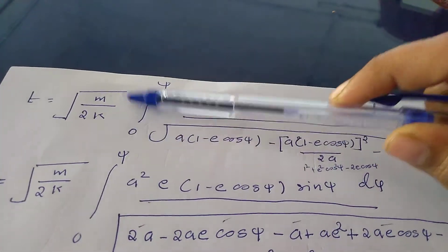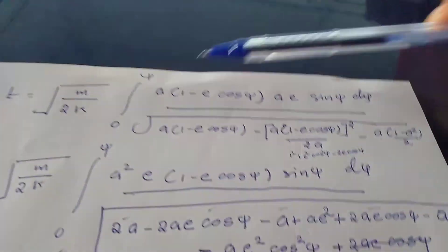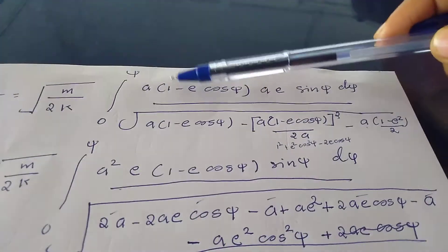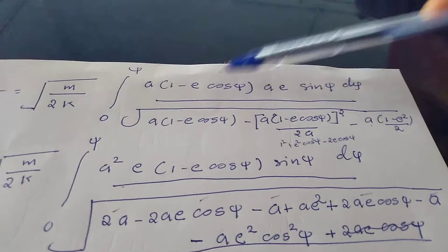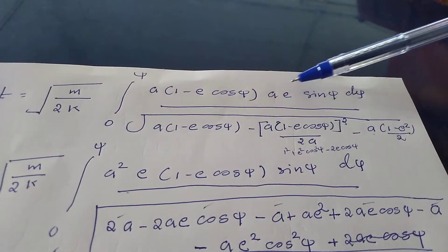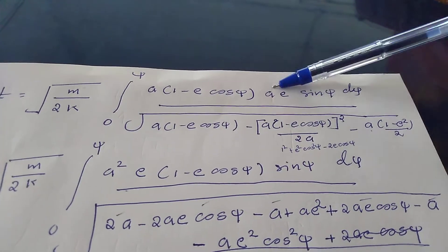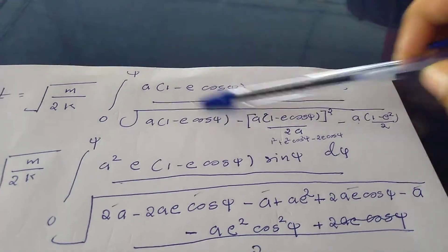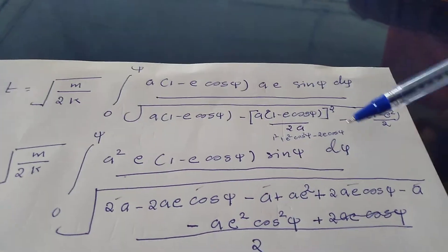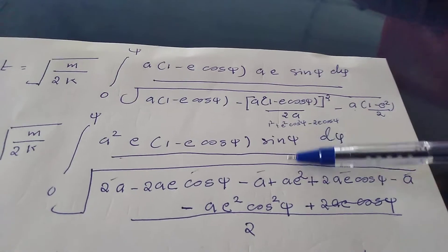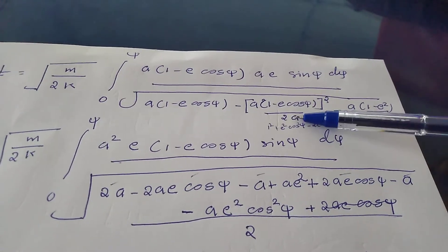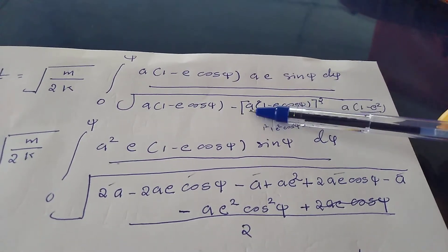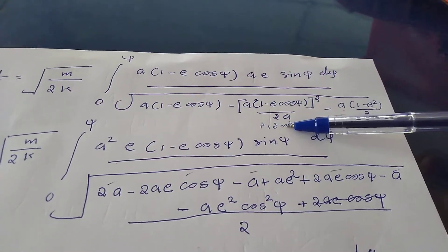t equals square root of m by 2k times a(1 minus e cosine psi) times a e sine psi d psi. We can cancel the e squared terms. Expanding the bracket: (1 minus e cosine psi) squared equals 1 plus e squared cosine squared psi minus 2e cosine psi.